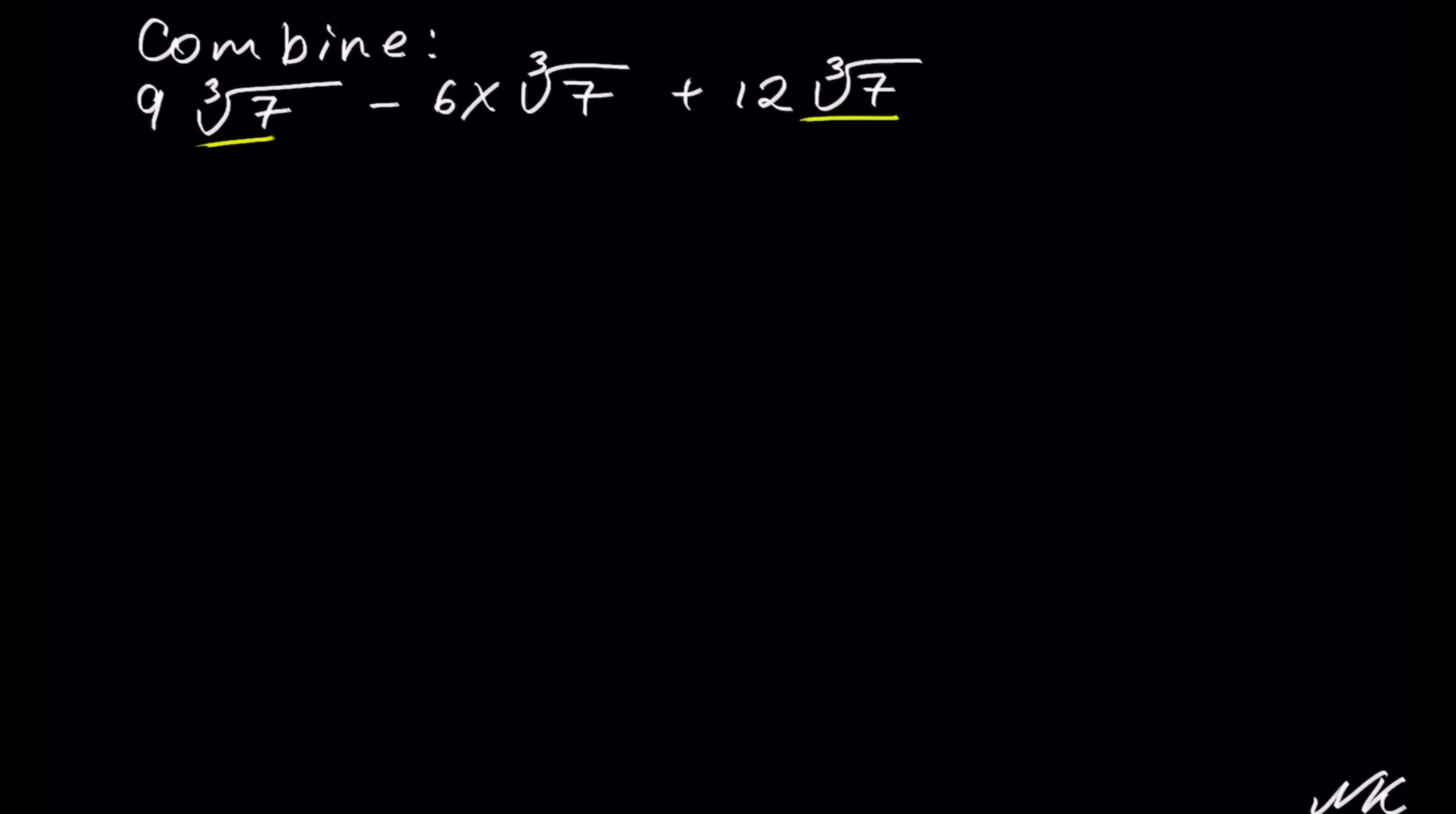You might be asking yourself why the middle term of 6x cube root of 7 is not included in this. It's because we have x in there. Remember, like terms have to have the same variables as well.